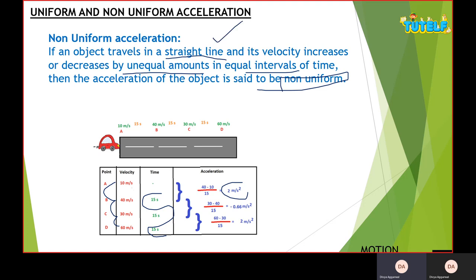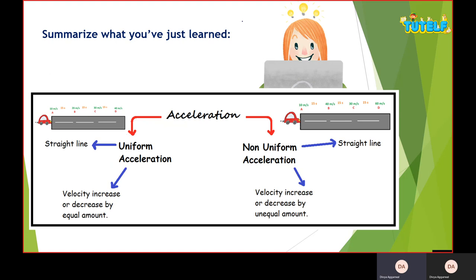Make sure to mention all three points when defining both non-uniform and uniform acceleration. In summary: acceleration is of two types — uniform and non-uniform. Both occur along a straight line. In uniform acceleration, velocity increases or decreases by equal amounts — here 10 m/s each time. In non-uniform acceleration, velocity increases or decreases by unequal amounts — an increase of 30 m/s, a decrease of 10 m/s, then an increase of 30 m/s.